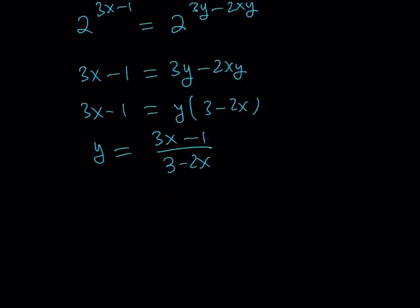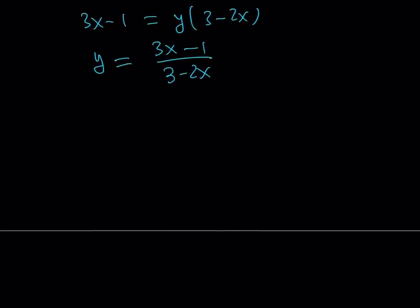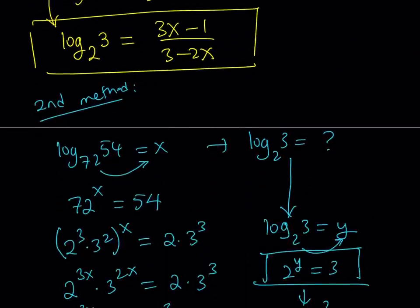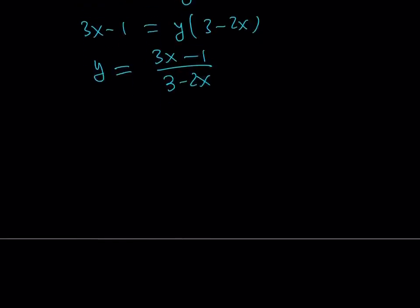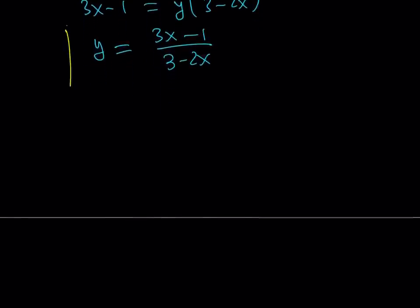So basically what we're looking for is going to be this expression right there. And if you go back to the first method we got 3x minus 1 divided by 3 minus 2x which is the same as this one. And this brings us to the end of this video.